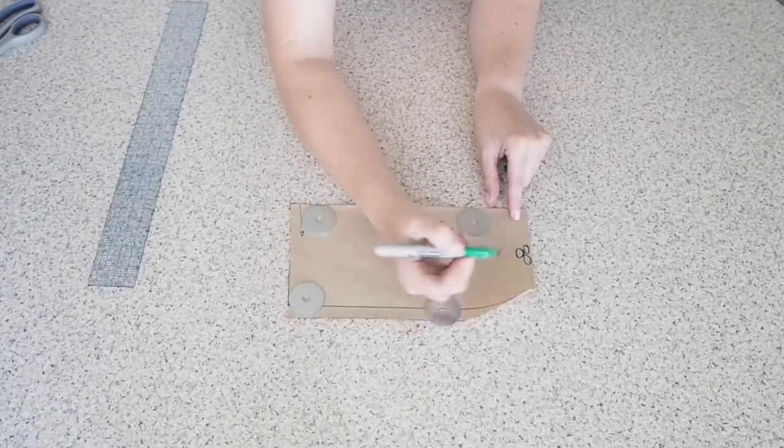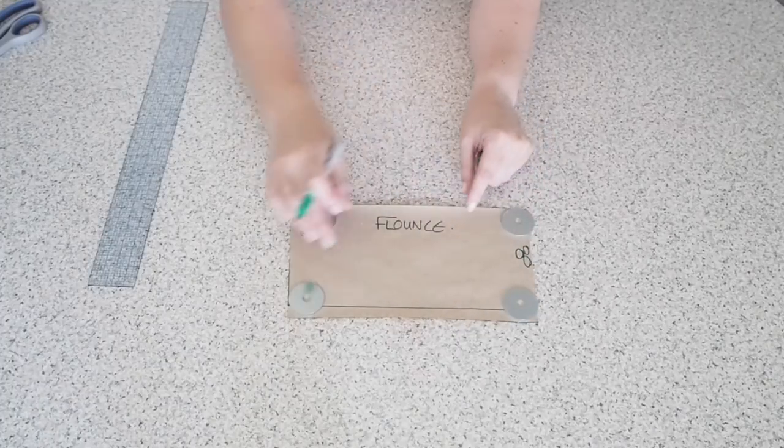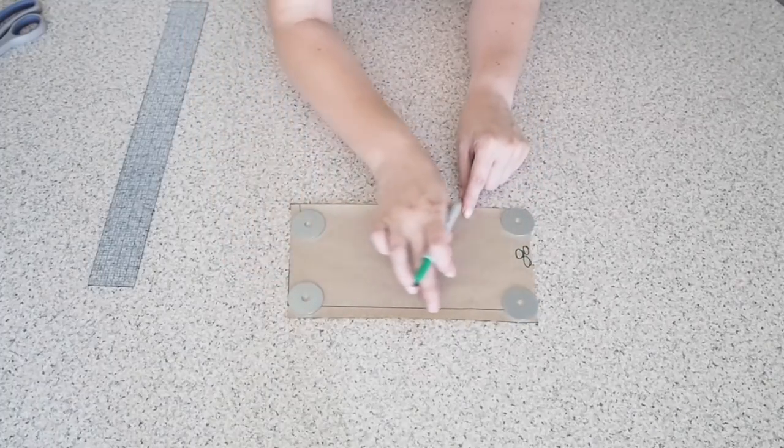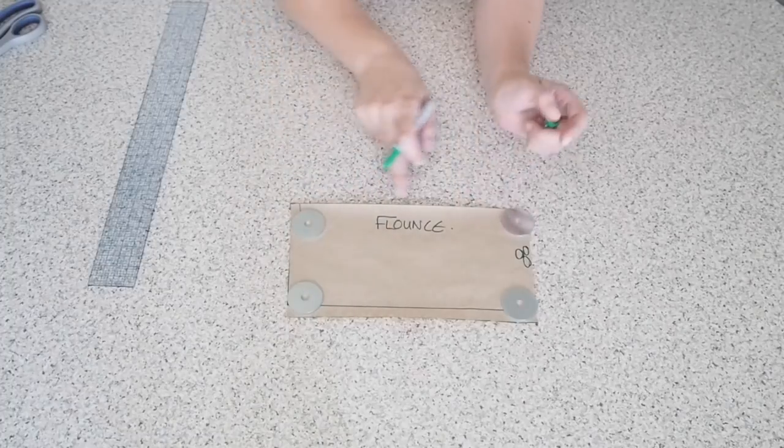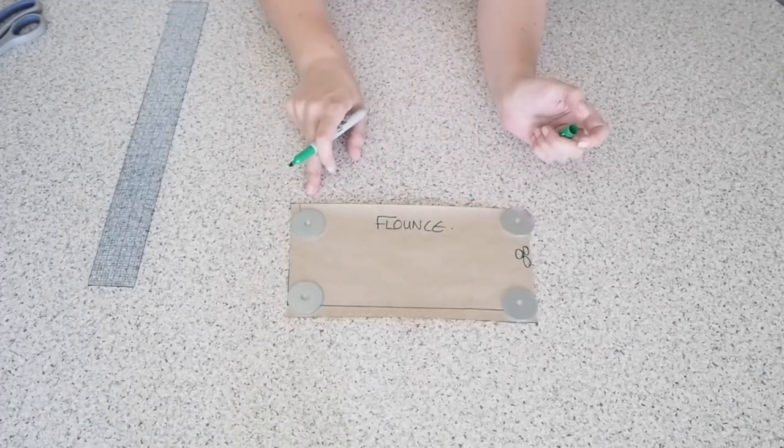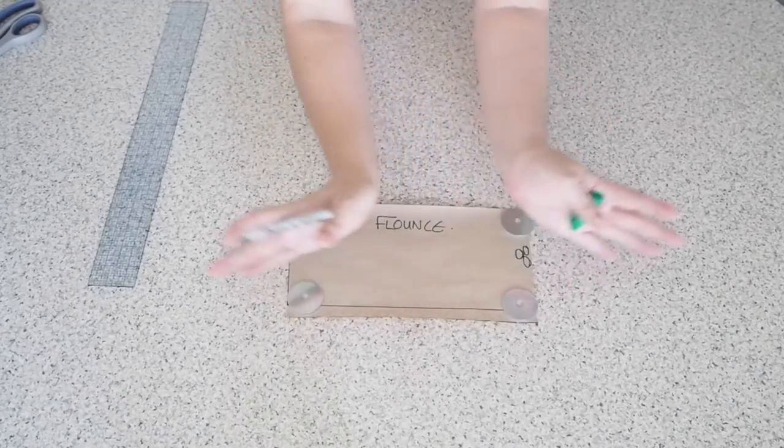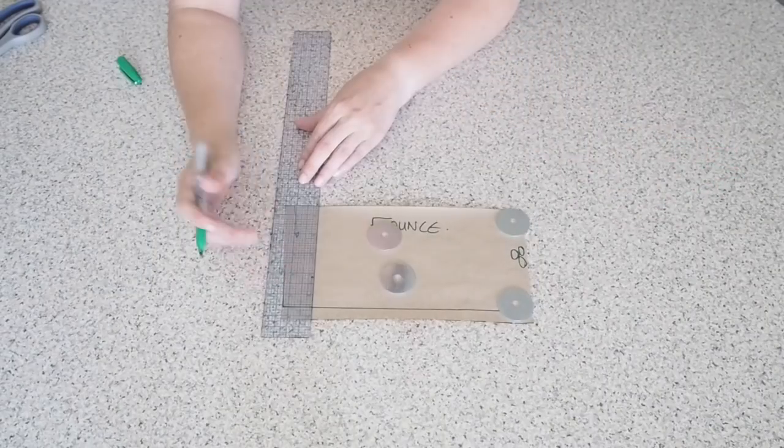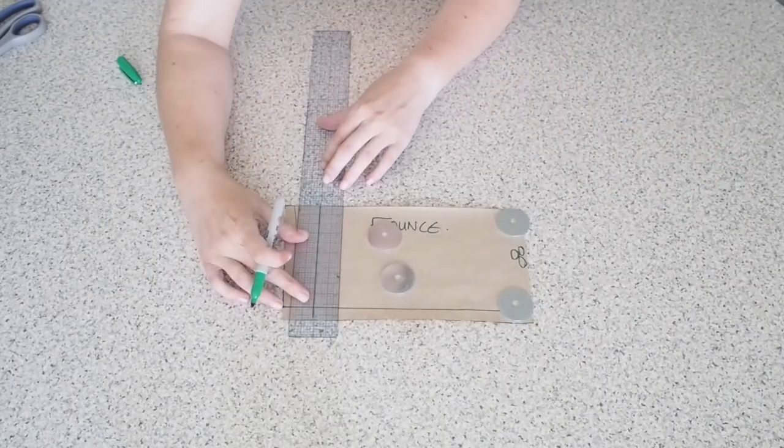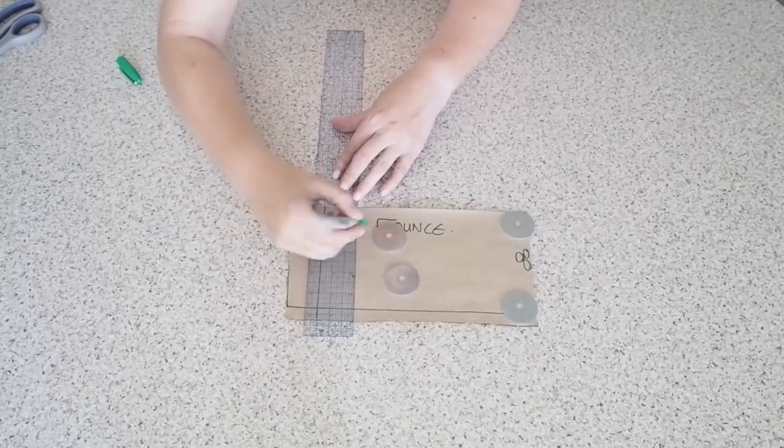I'm just transferring my markings from the skirt to the flounce. So my skirt is cut on the fold so I want my flounce to be cut on the fold. So that's what my three little circles are there. I had seam allowance already at the hem of the flounce and a side seam allowance already added.